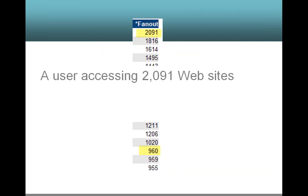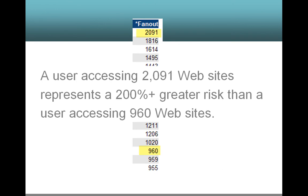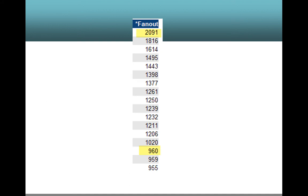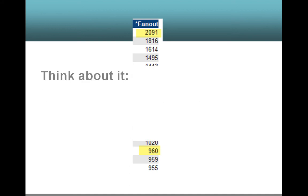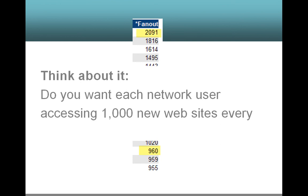A user accessing 2,091 websites represents a 200% greater risk than a user accessing 960 websites. Think about it — do you want each network user accessing 1,000 new websites every week?